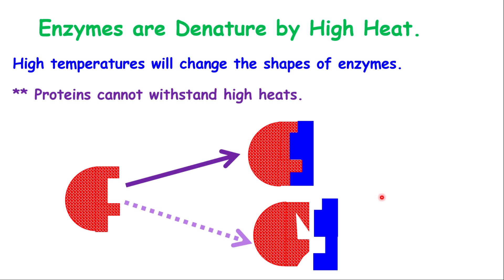Another property of enzymes is that enzymes are denatured by high heat. High temperatures will change the shape of enzymes. Proteins cannot withstand high heat — for example, if you put an egg in a frying pan, you notice it becomes harder and changes structure; it's not jelly-like or flowing anymore. The same thing happens to enzymes because enzymes are proteins. Very high heat will change their shape, so the word to look out for here is 'denatured,' which simply means their properties and shape are changed.